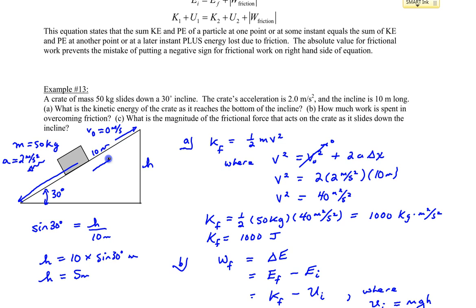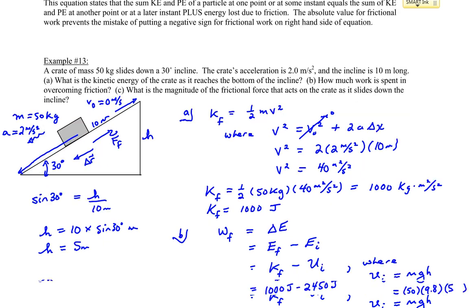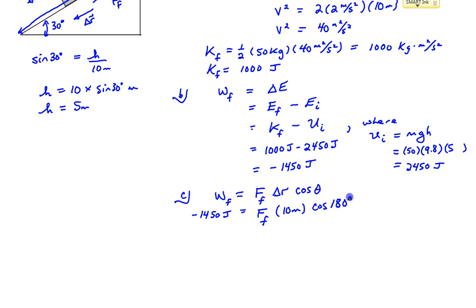And then the angle between the force of friction, which is up the ramp, but the displacement is down the ramp. That angle between those two vectors is 180 degrees. So we have cos of 180 degrees. The force of friction would be negative 1,450 joules divided by 10 times negative 1, so divided by negative 10 meters. This works out to 145 newtons of force.